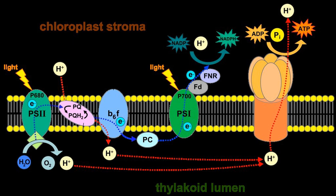In anoxygenic photosynthesis, various electron donors are used. Cytochrome B6F and ATP synthase work together to create ATP. This process is called photophosphorylation, which occurs in two different ways.